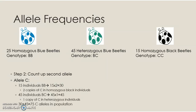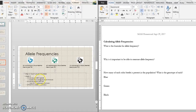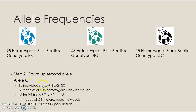Now we do the same for the C allele, because the denominator of the allele frequency equation requires knowing the total number of alleles in the population. There are 15 CC individuals — black beetles homozygous for C. So 15 times 2 is 30 C alleles from the homozygotes. There are still 45 heterozygotes, each with one C allele, so 45 more. 30 plus 45 is 75 — there are 75 C alleles in this population.